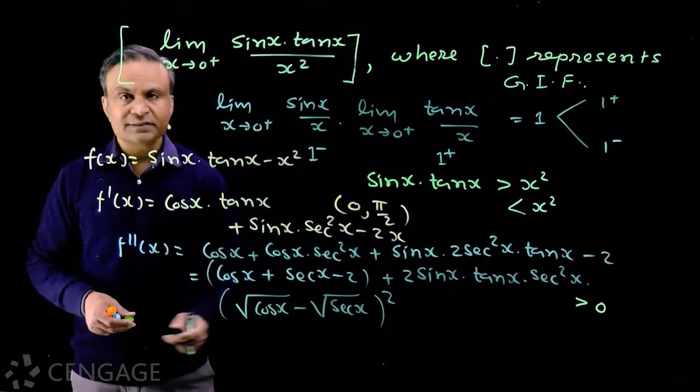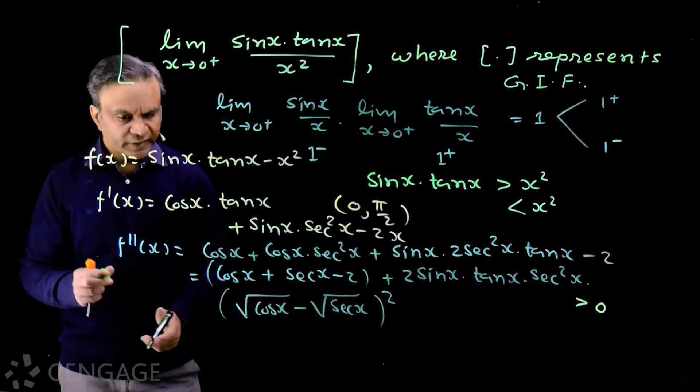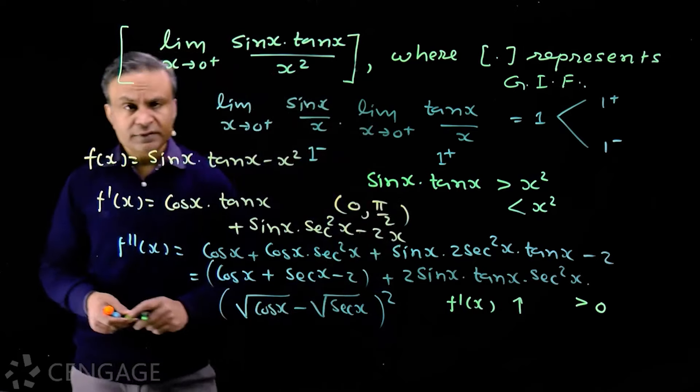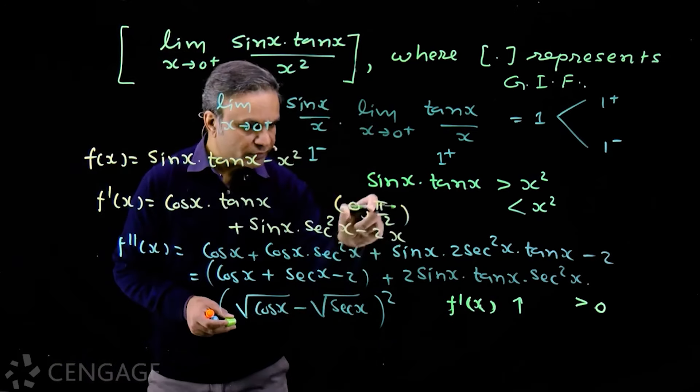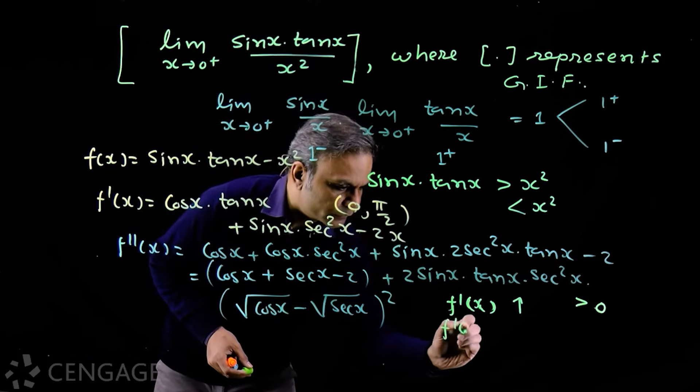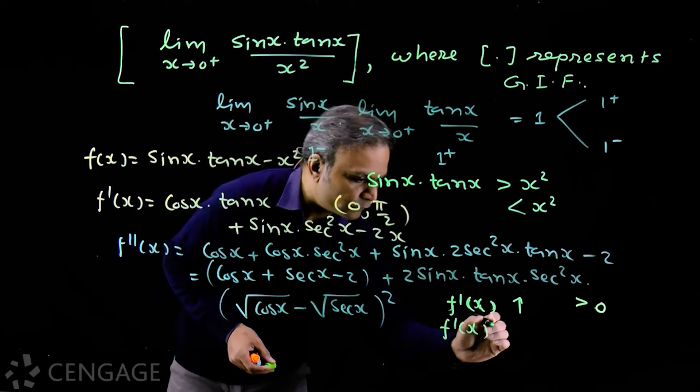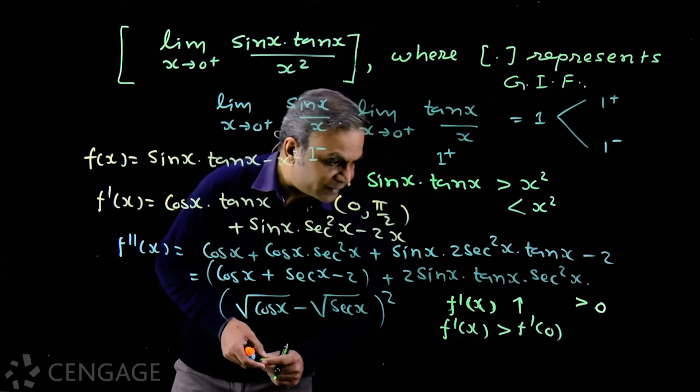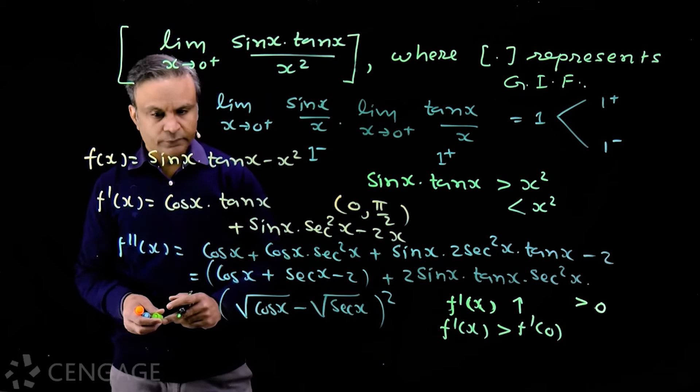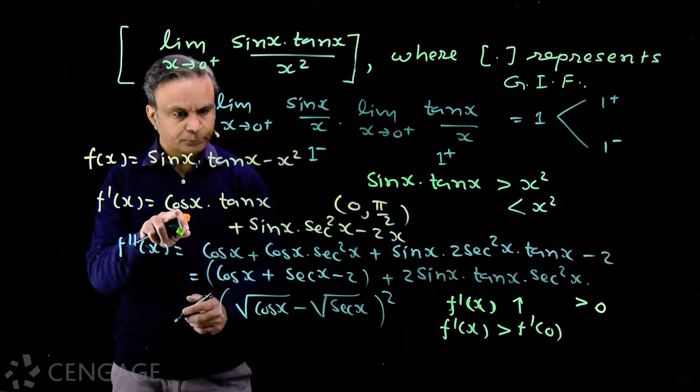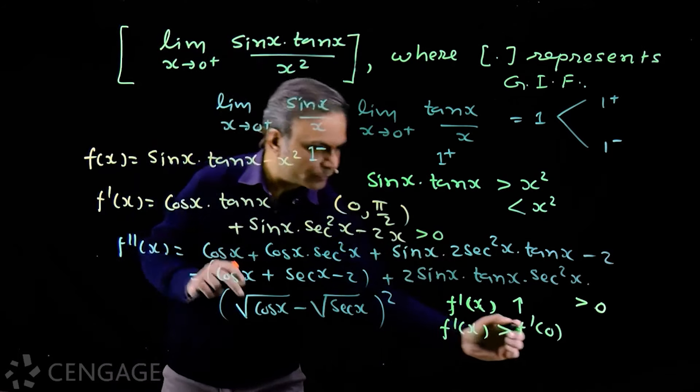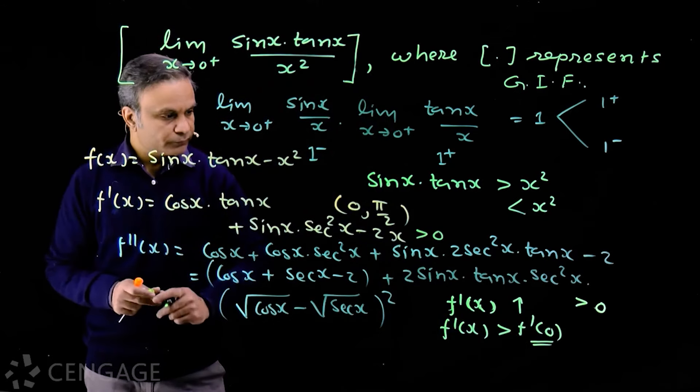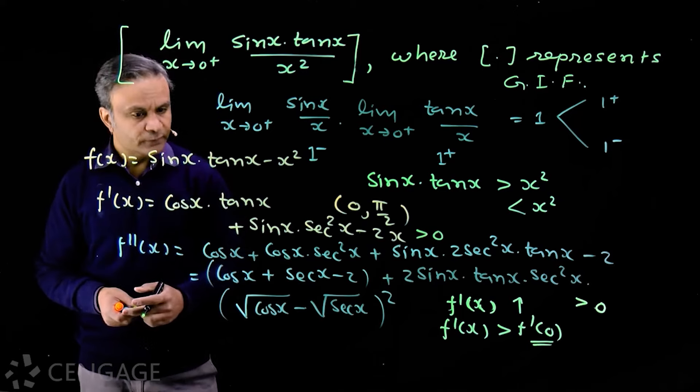So what we find, double derivative is greater than 0 in this interval. So we can say that function f prime x increases in the interval 0 to pi by 2. So for this interval we have derivative of f(x) greater than derivative of f(x) at x equals 0, which equals 0. So we get this value greater than 0, because this value is 0.